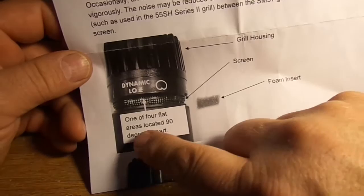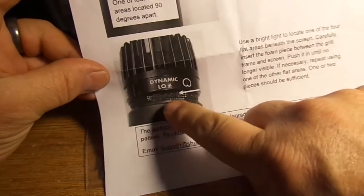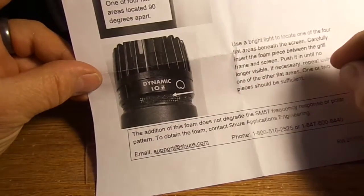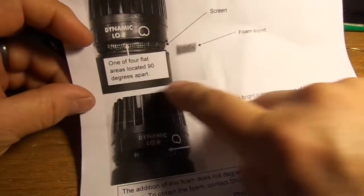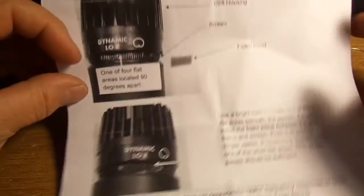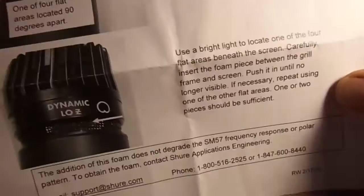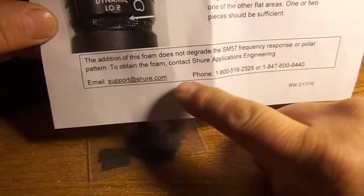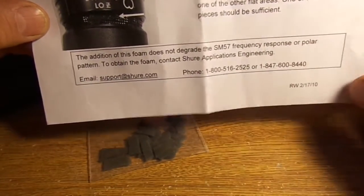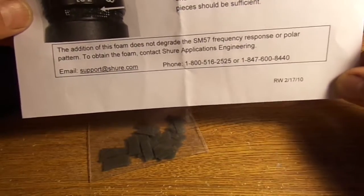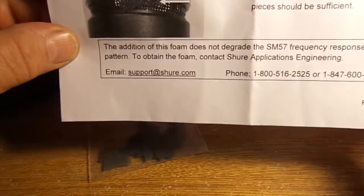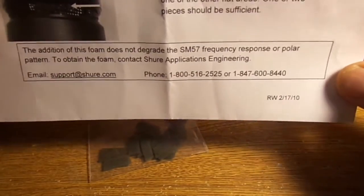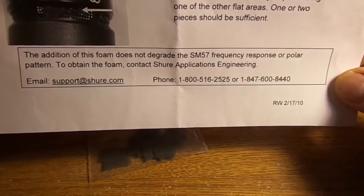And it says one of four flat areas located 90 degrees apart. So they want you basically just to shove the foam up inside the cap. And at first I kept saying I don't know what these flat areas are. So luckily I had an old microphone. Oh and it does say here the foam does not degrade the SM57 frequency response or polar pattern. So contact support at Shure.com.